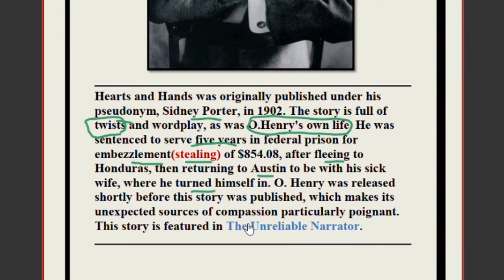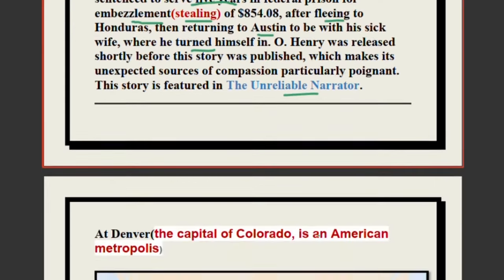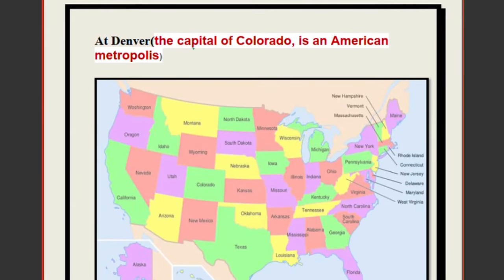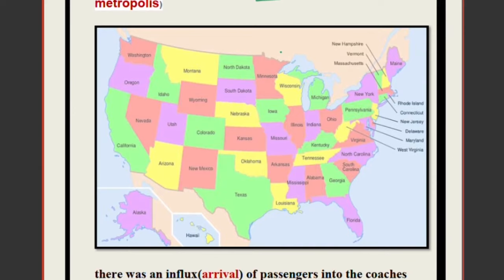This makes his unexpected sources of compassion particularly poignant. The story is featured in the unreliable narrator style. Now we will move on to the story. First, we will try to understand the setting. The story is set in Denver — the capital of Colorado, an American metropolis. Looking at this map of America, you can see Colorado and its capital Denver.